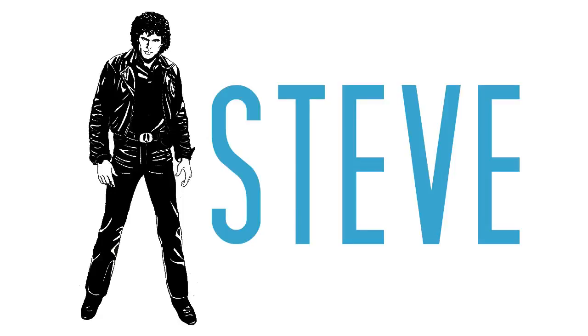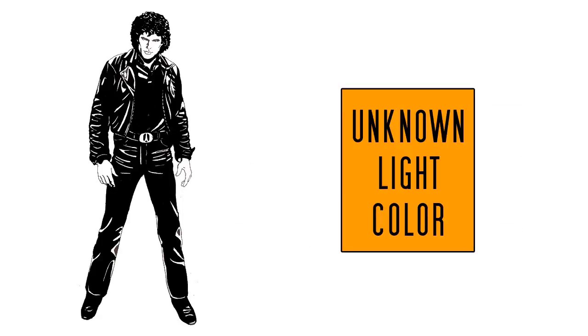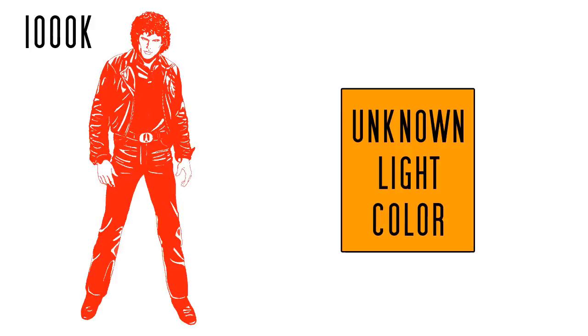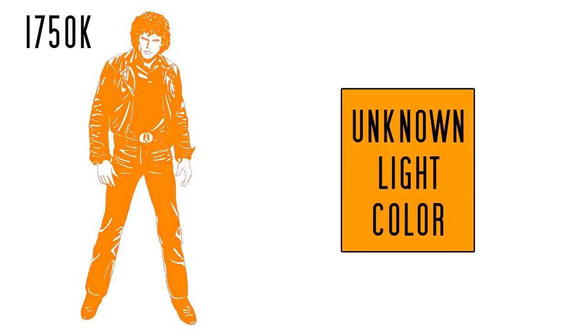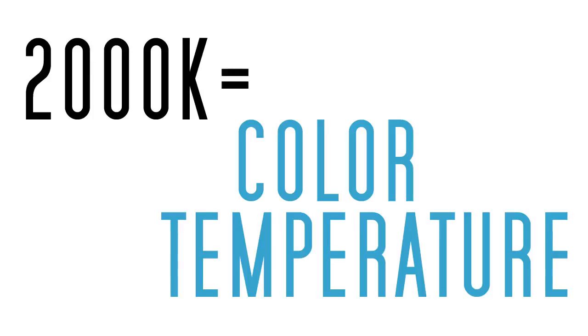So let's consider an ideal black body, and let's call it Steve. To determine the color temperature of a light, we need to compare it to the light emitted by our black body Steve when warmed up. At what temperature does Steve have to be to give the same color? That value is called color temperature, or Ct.